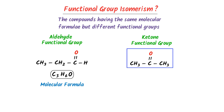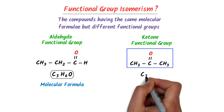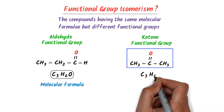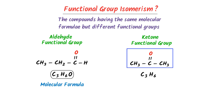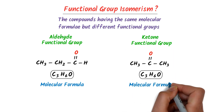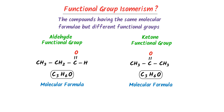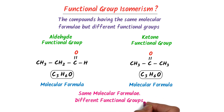While in this ketone molecule, there are also three atoms of carbon, six atoms of hydrogen, and only one atom of oxygen. So the molecular formula of this compound is also C3H6O. Thus, they both have the same molecular formula but different functional groups. Therefore, we say that they are functional isomers. Remember that aldehydes and ketones have functional isomers.